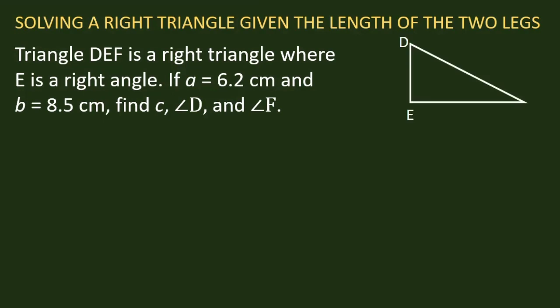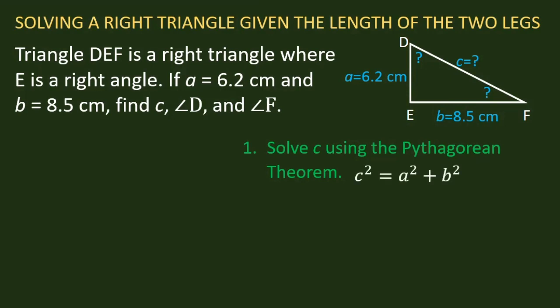We have triangle DEF with given sides a and b. We are going to find side c as well as angles D and F. First, we will use the Pythagorean theorem to find the value of c. The Pythagorean theorem is c² = a² + b². Substitute a and b.